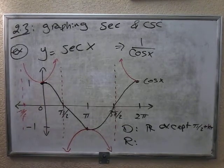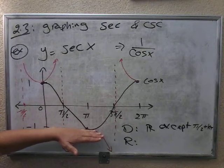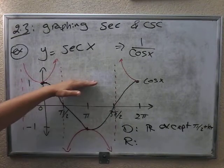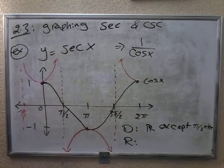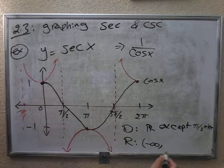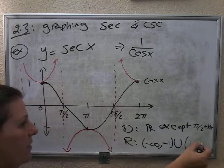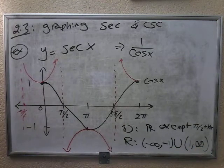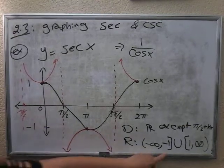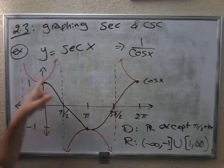For the range — the range is all the y values. The minimum is negative infinity to negative 1. Then there's a gap, and it starts from 1 again to positive infinity. So the range is negative infinity to negative 1, union, positive 1 to positive infinity. We use brackets because those points are part of the graph.